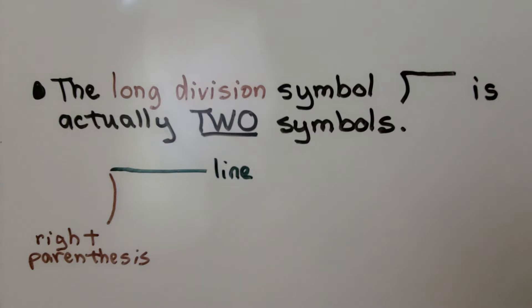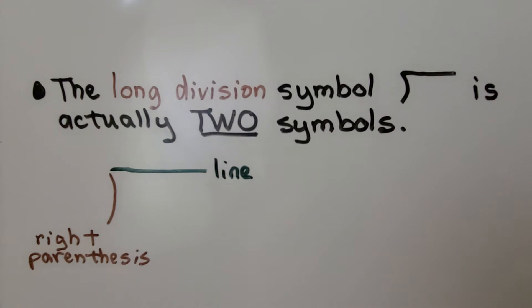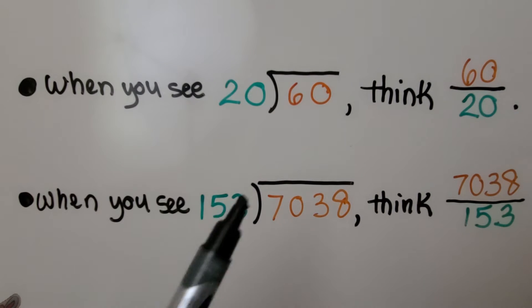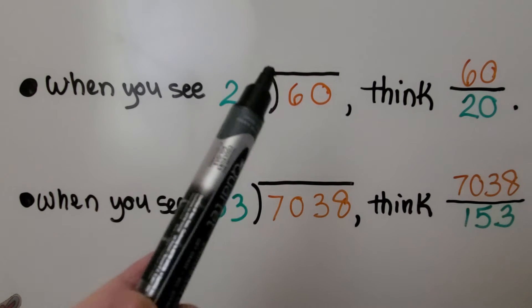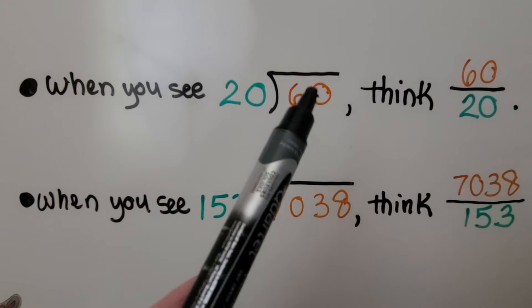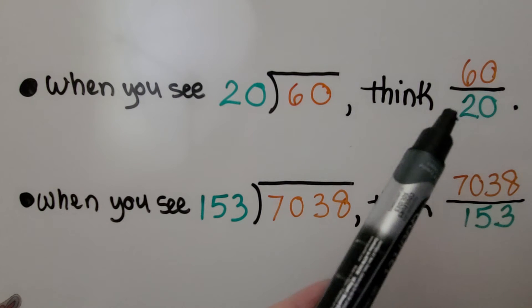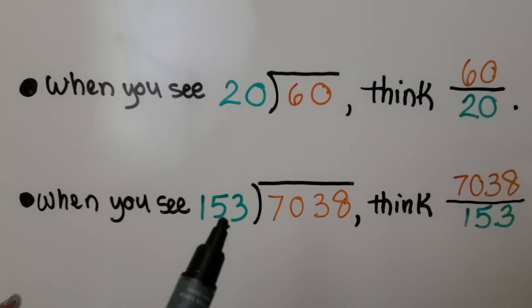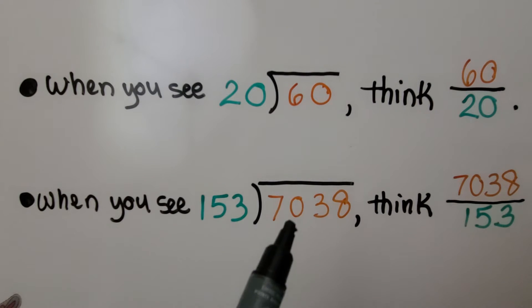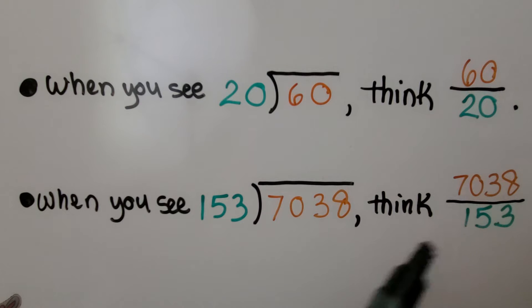Did you know the long division symbol is actually two symbols? It's a right parenthesis and a line on the top. When you see this, a 20 and then we've got our division symbol here with the 60 on the inside, this is 60 divided by 20. I want you to think 60 over 20. If you see 7038 divided by 153, we've got our divisor on the outside, our dividend on the inside. I want you to think 7038 over 153.